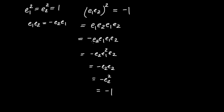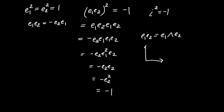Hopefully that squaring to minus one rings a few bells about complex numbers! In the complex numbers, the big innovation is the imaginary unit i, which squares to minus one — a property no real number has. And remember that E1E2 was also a bivector equal to E1∧E2. So this bivector, when fed into the geometric product, squares to minus one. In light of this, I'm going to adopt the suggestive notation of calling E1 times E2 by the name capital I.